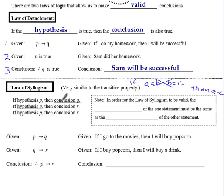So it kind of looks like this. If hypothesis P, then conclusion Q. If hypothesis Q, then conclusion R. And we can cut out this middleman of the part that's repeated and say if hypothesis P, then conclusion R. In order for the law of syllogism to be valid, the conclusion of one statement must be the same as the hypothesis of another statement.